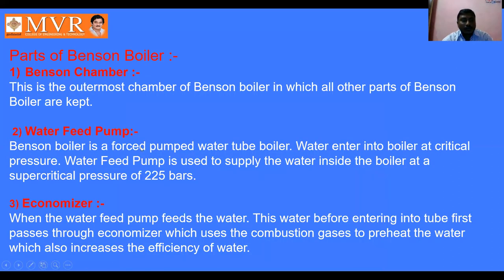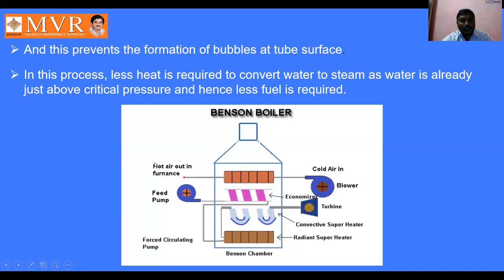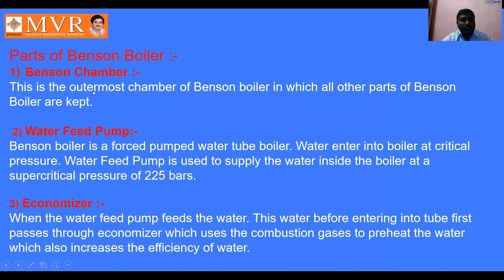The parts of the Benson boiler are: feed pump, economizer, turbine, radiant superheater, convective superheater, and circulating pump. The Benson chamber is the outermost chamber of the Benson boiler in which all the parts are kept. The Benson boiler is a forced pump water tube boiler. The water feed pump is used to supply water inside the boiler at a supercritical pressure of 225 bar.